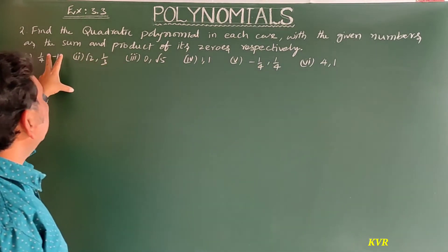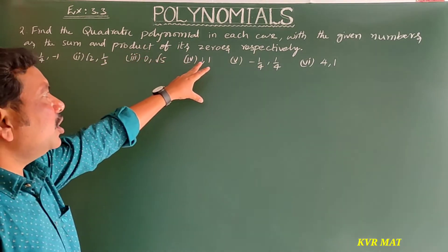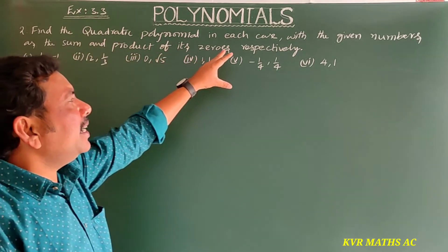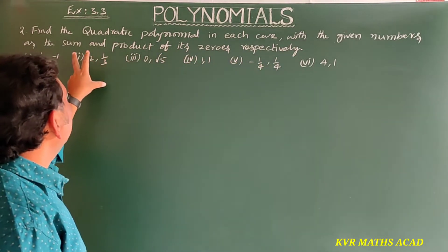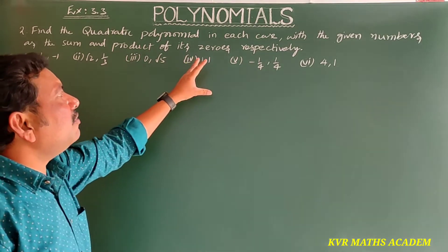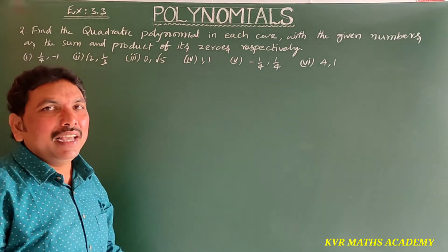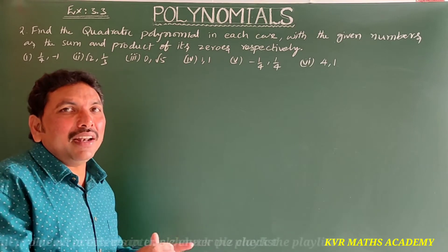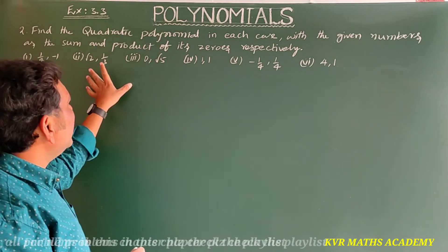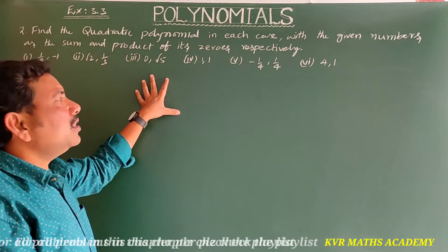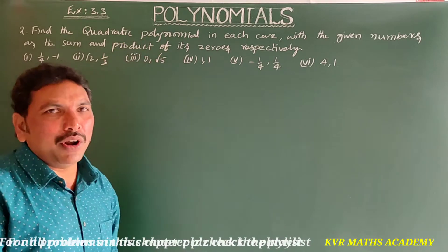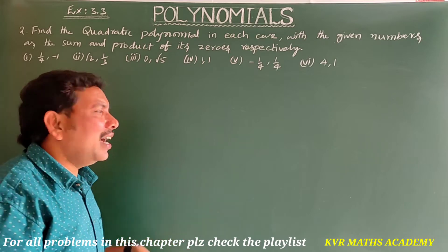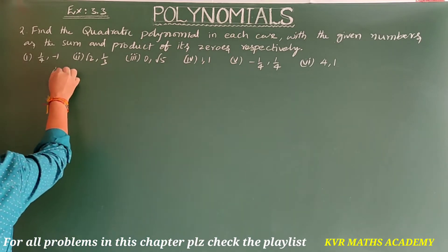Find the quadratic polynomial in each case with the given numbers as the sum and product of its zeros respectively. Here, sum of the zeros and product of the zeros are given; we should find the quadratic polynomial using these values. Let us find them one by one.